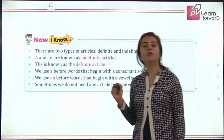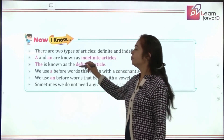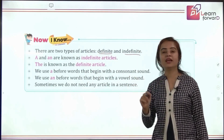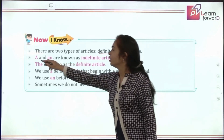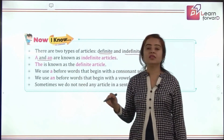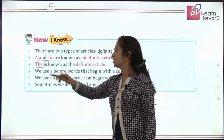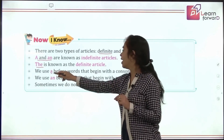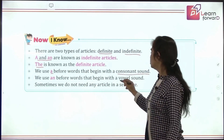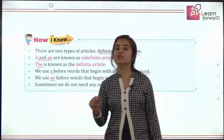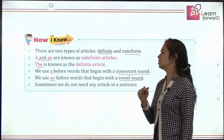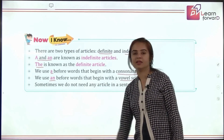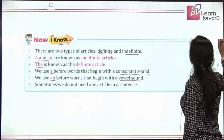It is time to recall what we have learned about articles. The two types are definite and indefinite. The indefinite articles are a and an, and the is the definite article. We use a before consonant sounds and an before vowel sounds. We focus on the initial sounds, not the letters. And sometimes of course we don't need to use any article in the sentence.